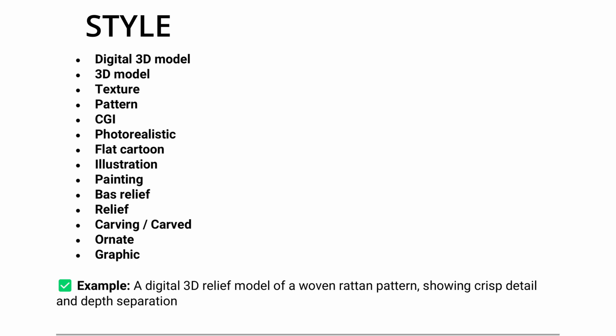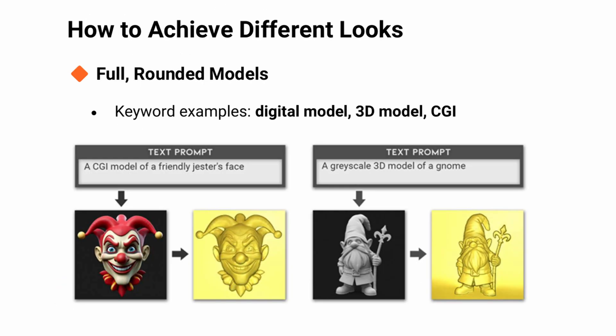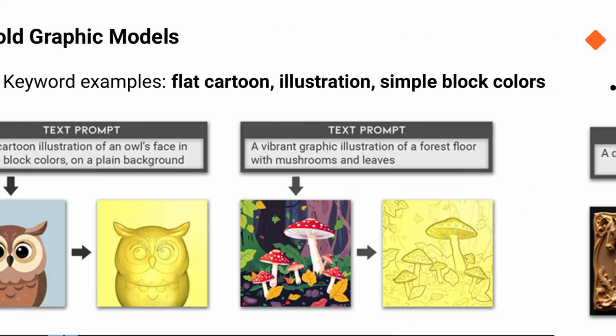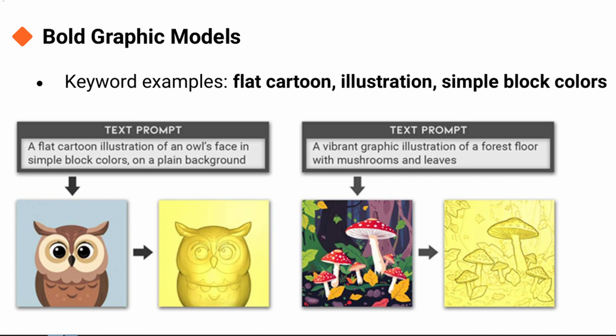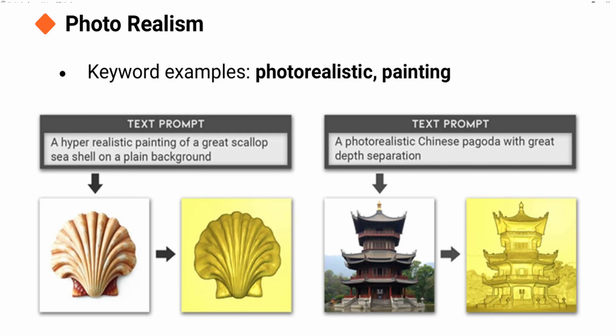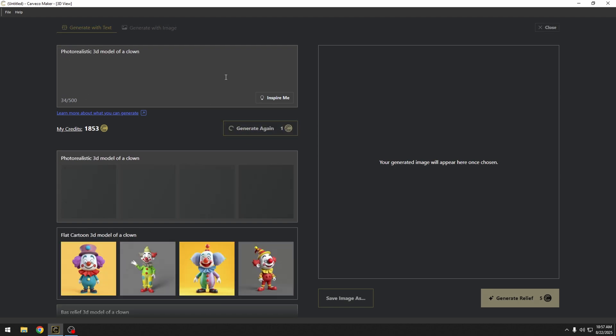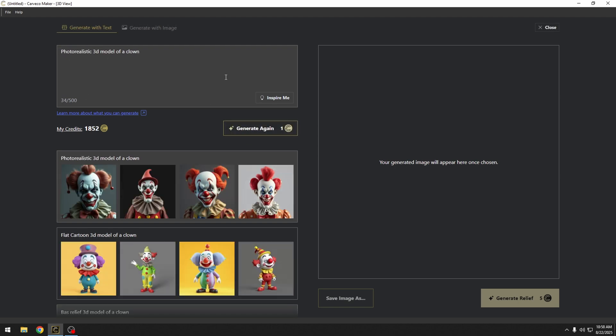Style is the foundation of every prompt. It tells the AI what kind of look you want. Digital 3D model, CGI, rounded gives you a sculpted full body form. Base relief, carved, ornate creates the classic engraving carving look. Flat cartoon, illustration simplifies into bold graphic designs. Photorealistic painting adds realistic shading to lifelike detail. Think of style as picking the art style of your relief. Once you set it, everything else follows in that direction.